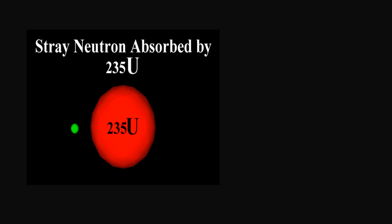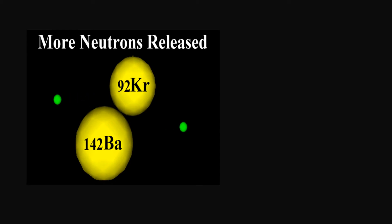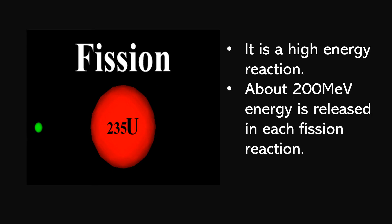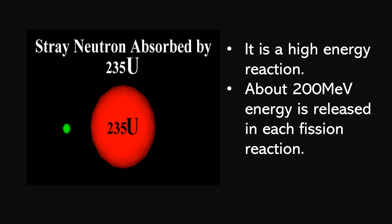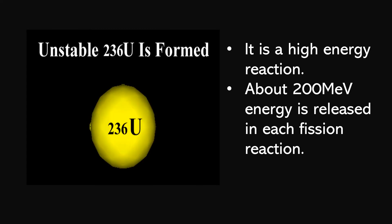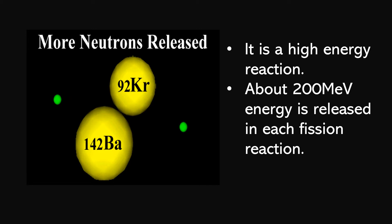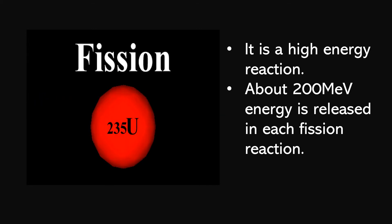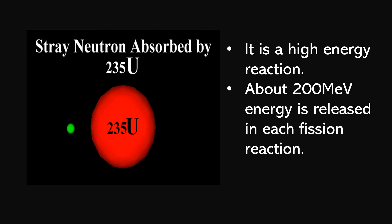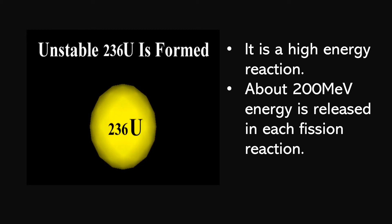Now let's see the animation for nuclear fission reaction. A slow-moving neutron is bombarded on uranium U-235, absorbed by U-235, and then uranium splits into krypton and barium with the release of neutrons. Nuclear fission reaction is a highly energetic reaction — it releases a lot of energy. About 200 mega electron volt (MeV) of energy is released in each fission reaction, which is a very large amount of energy.